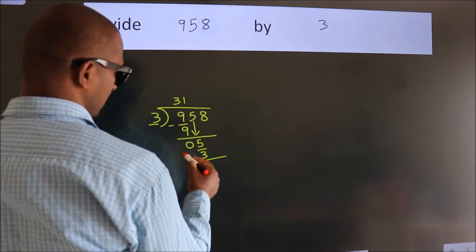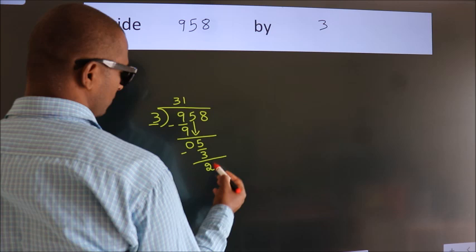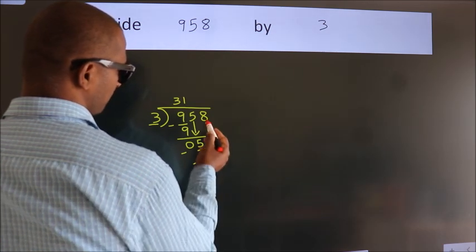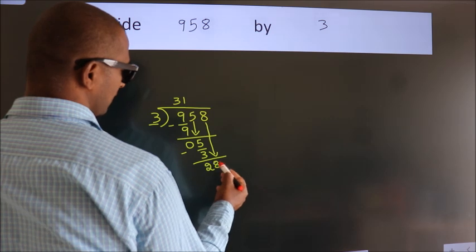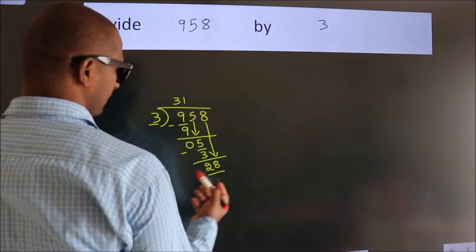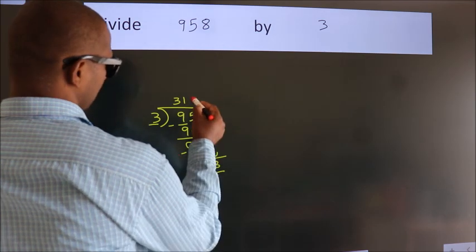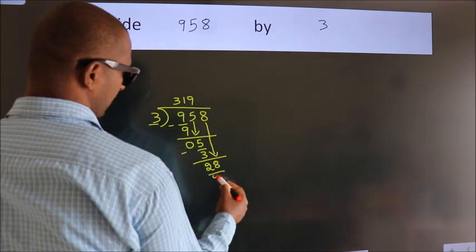Now we subtract. We get 2. After this, bring down the beside number, 8 down, making 28. A number close to 28 in the 3 table is 3 nines, 27.